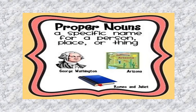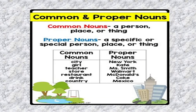Let us see certain more examples which will help us to understand this topic in a better way. Common noun can be any person, like a city, or a place or a thing. City can be any city. Girl can be any girl. Teacher can be any teacher. Store, restaurant, drink, country — it can be any restaurant, any drink, any country. So these words, they are actually our common nouns.